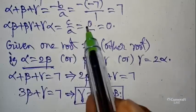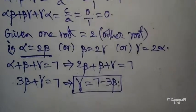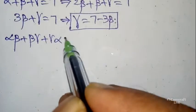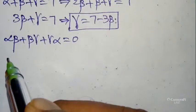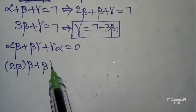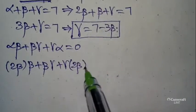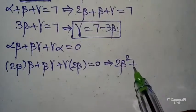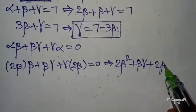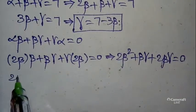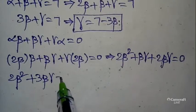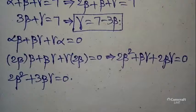Second formula: alpha*beta + beta*gamma + gamma*alpha = c/a = 0/1 = 0. Substituting alpha = 2*beta: (2*beta)*beta + beta*gamma + gamma*(2*beta) = 0, which gives 2*beta² + beta*gamma + 2*beta*gamma = 0, so 2*beta² + 3*beta*gamma = 0.